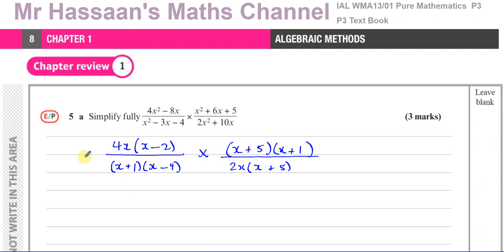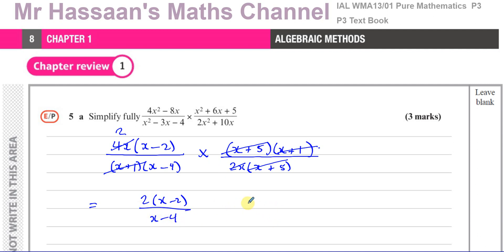Now we cancel common factors across numerator and denominator. (x+5) cancels with (x+5), (x+1) cancels with (x+1), and 4x and 2x cancel leaving 2. So in the numerator we're left with 2(x−2), and in the denominator x−4. The answer can be written as 2(x−2)/(x−4) or equivalently (2x−4)/(x−4). Both are fully simplified — there's no further common factor to cancel, so either factorized or expanded form is acceptable.